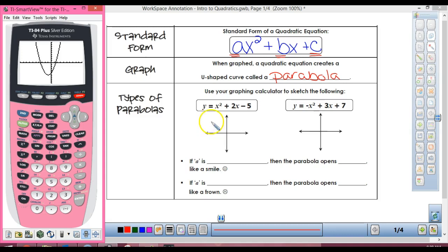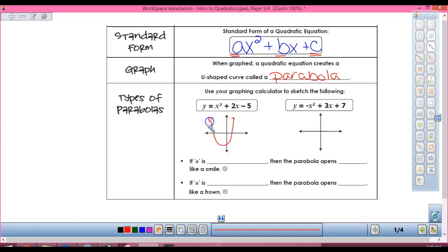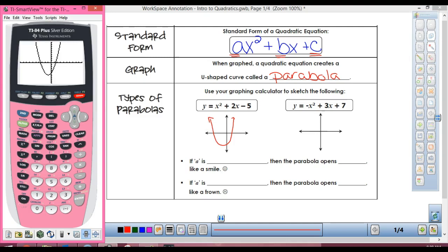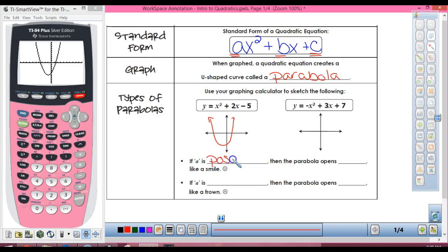So we can just make a quick sketch that looks like that, right? Okay, so if a is, and in this case, what is a? It's a 1, right? If a is positive, then the parabola is going to open up. Notice how it's opening upwards, and it looks like a smile. That's if a is positive.